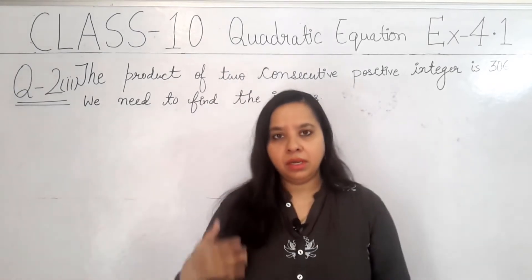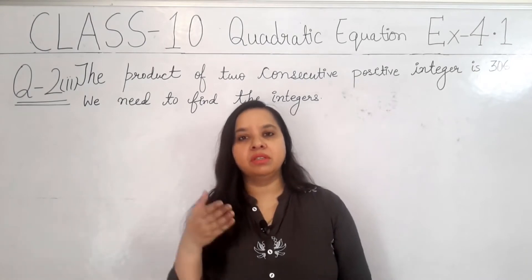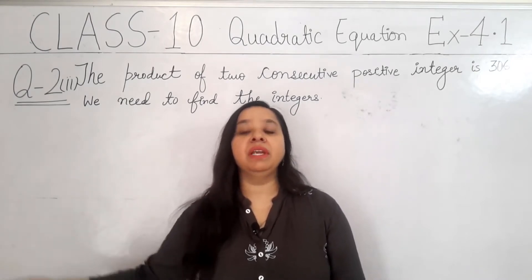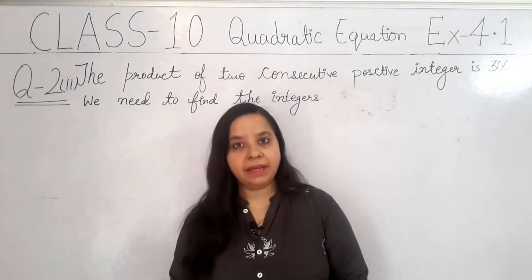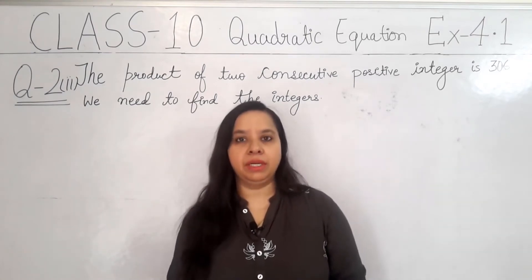Integers are the whole numbers. If we talk about positive integers, then the whole numbers are also positive integers. So, 1, 2, 3, 4, 5, 6, 7, 8, these are the positive integers. And negative integers are minus 1, minus 2, minus 3, minus 4. 0 is also an integer.